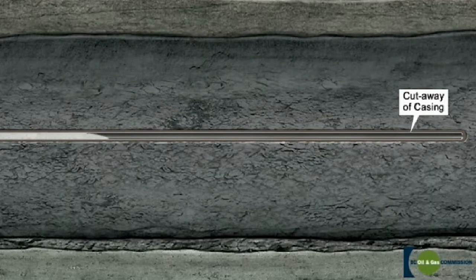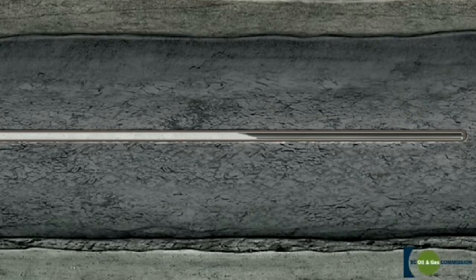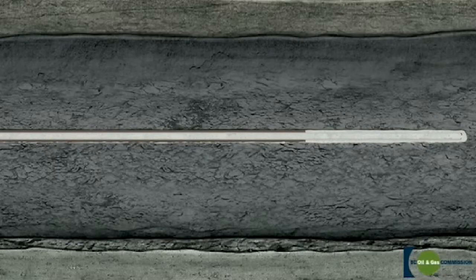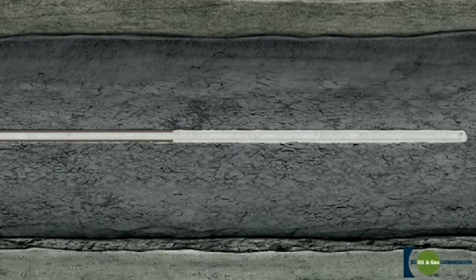Cement is again pumped down the casing and out through the hole in the casing shoe, forcing the cement up between the casing and the wall of the hole, filling the open space known as the annulus.